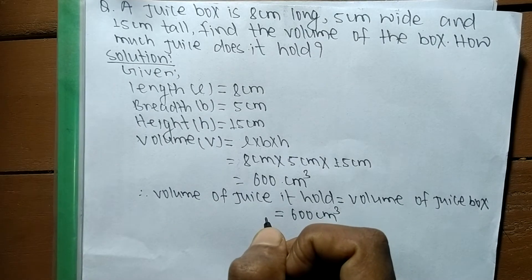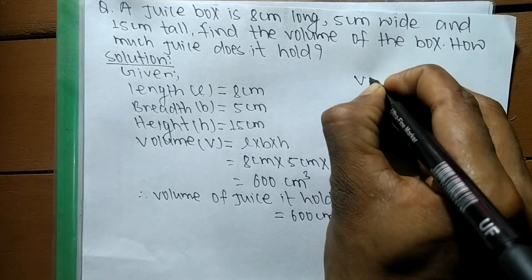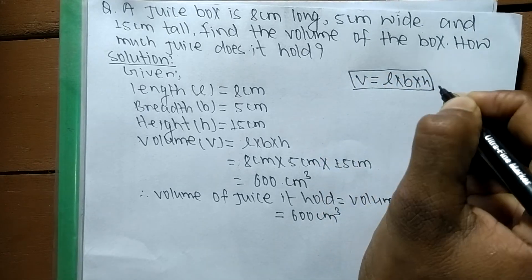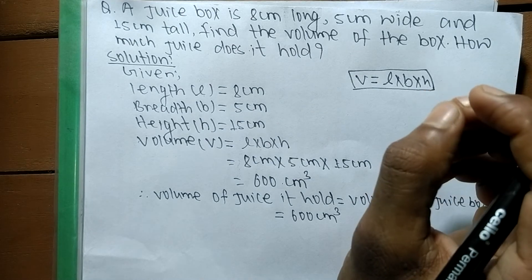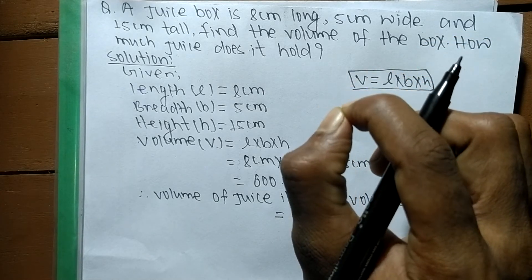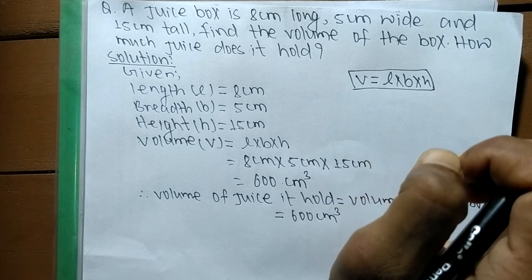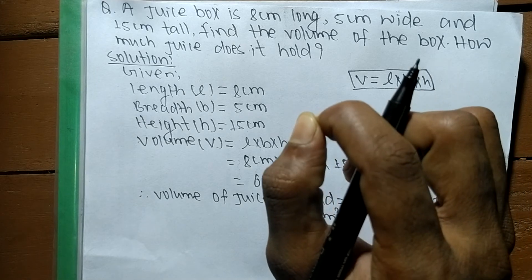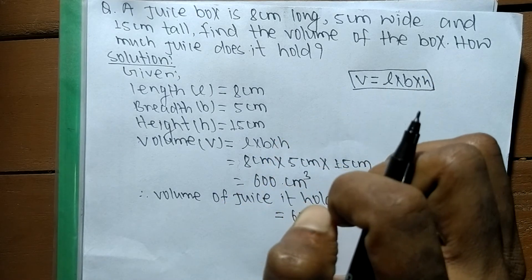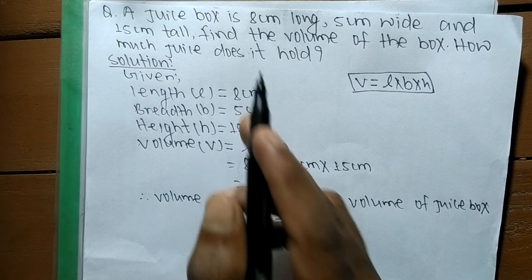In this way we can solve a problem related to any cuboid-shaped object. We just have to remember that the volume of a cuboid is equal to length times breadth times height — that is the basic formula. When there is an additional question like the volume of space it occupies, the volume of liquid it displaces, or the volume of anything it can hold, in that case the volume of the object equals the total amount of liquid it displaces or the volume of liquid it can hold.